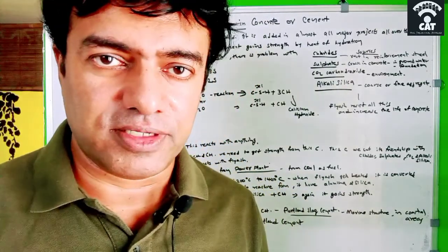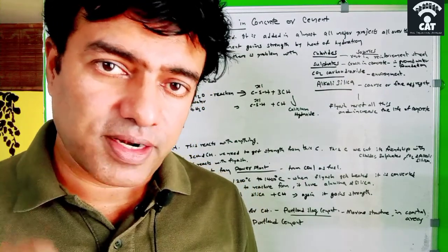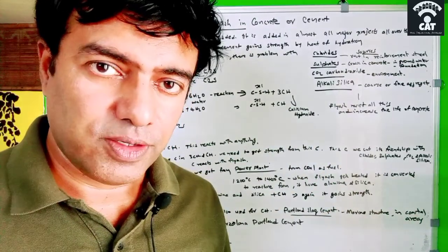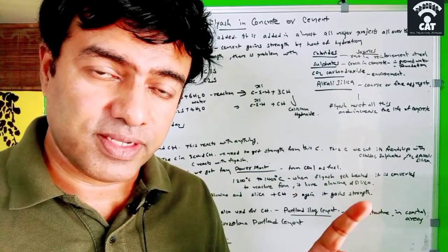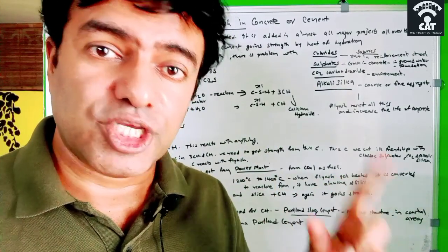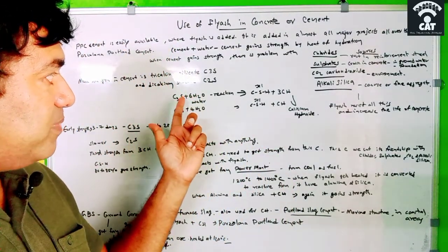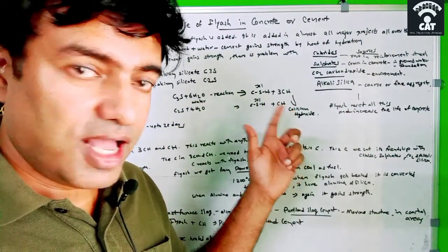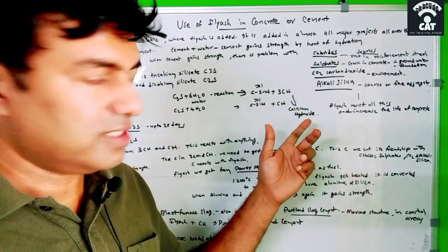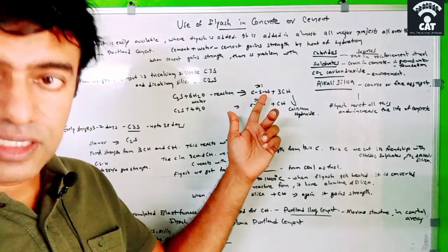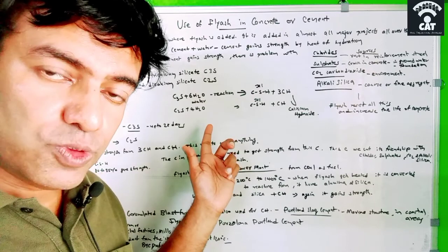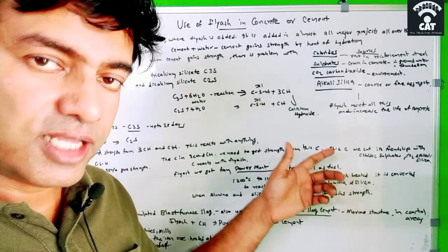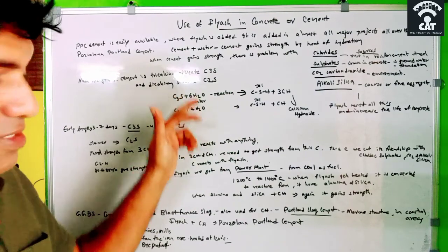Cement is basically calcium silicate. When water is added, tricalcium silicate (C3S) and dicalcium silicate (C2S) in the cement react with water. C3S plus 6H₂O gives CSH and 3CH, where CH means calcium hydroxide. Similarly, C2S plus 4H₂O gives CSH and calcium hydroxide. So both reactions produce CSH and calcium hydroxide as byproducts.